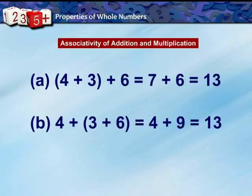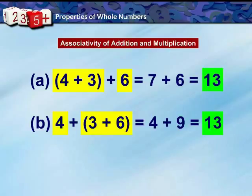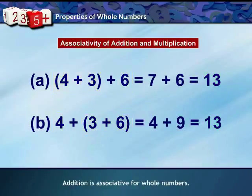If we add 4 and 3 first and then add 6 to their sum, or if we add 3 and 6 first and then add 4 to their sum, we get the same result. This property is called the associative property for addition of whole numbers. Try it with some other whole numbers as well.